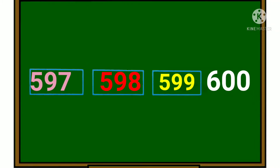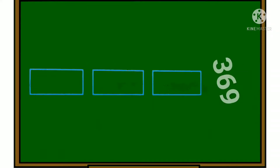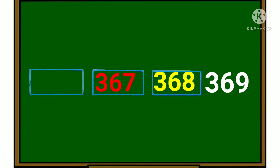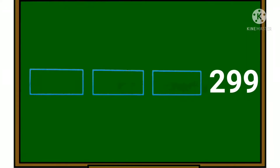Now see the second one. Read this number: three hundred and sixty-nine. What is the previous number of this? Three hundred and sixty-eight, three hundred and sixty-seven, three hundred and sixty-six.